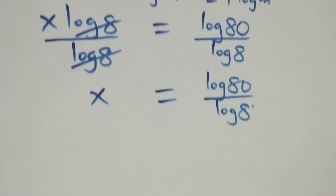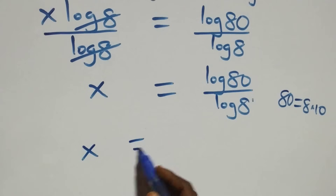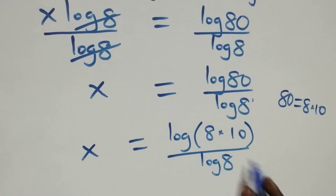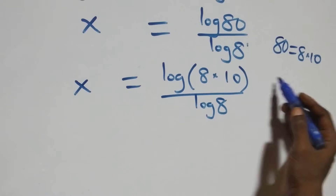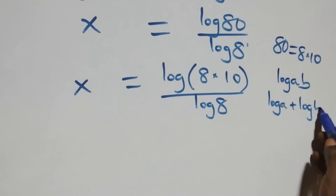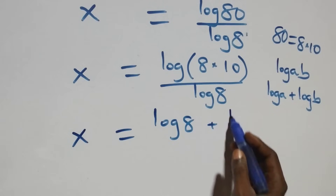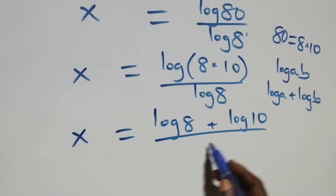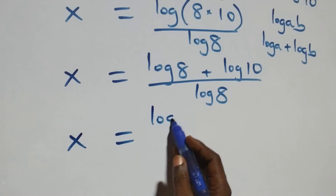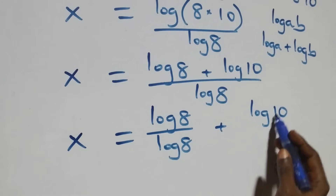Next, we can write 80 as 8 times 10. So x equals log(8 times 10) over log 8. This follows from the law of logarithm: log(a times b) can be expressed as log a plus log b. So we separate into two fractions: x equals log 8 over log 8, plus log 10 over log 8.